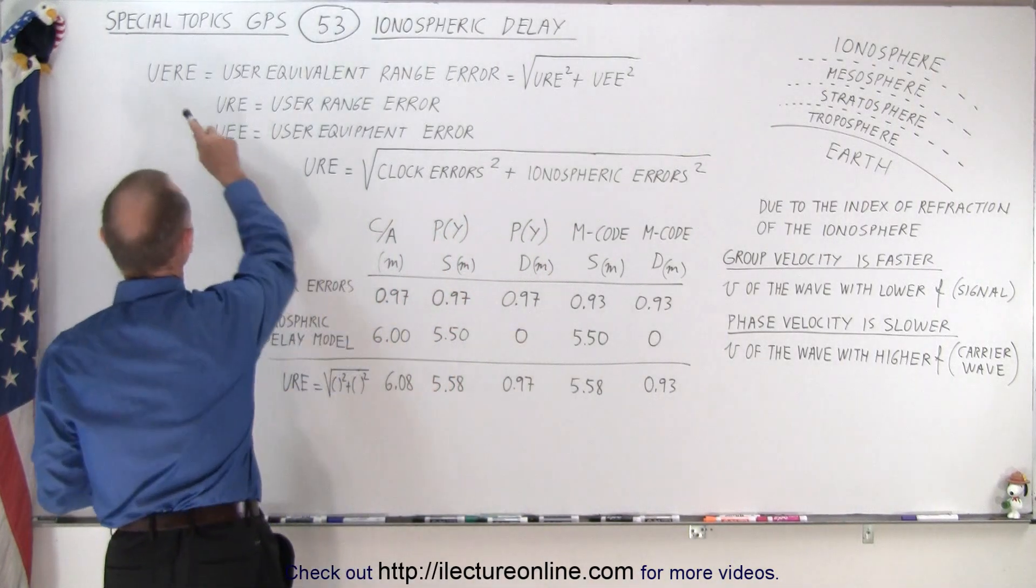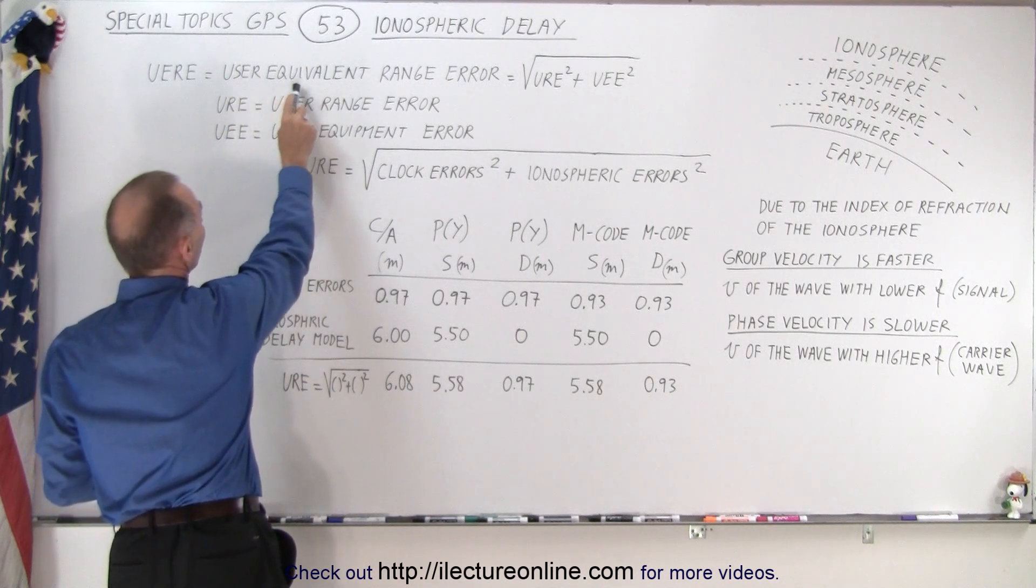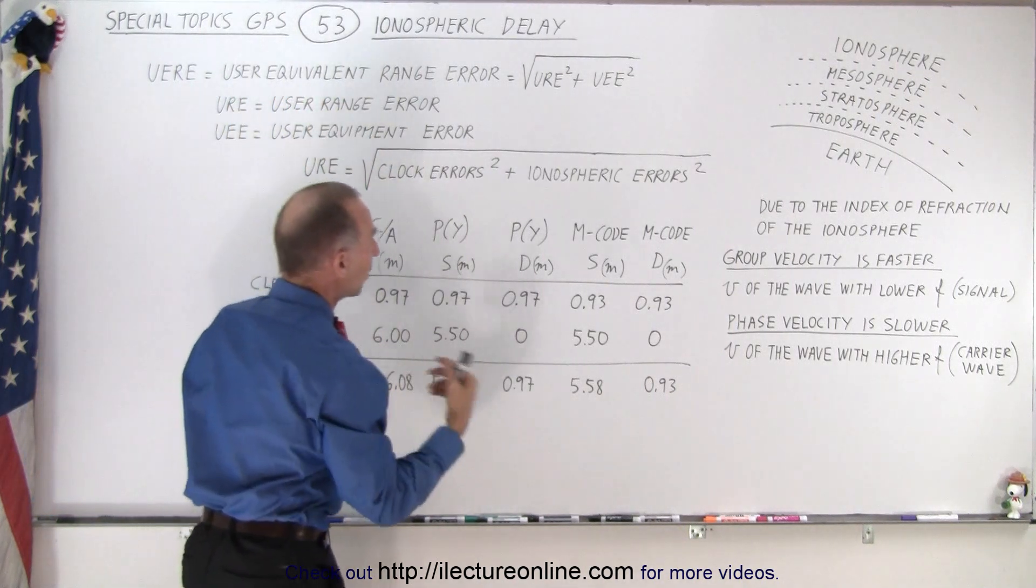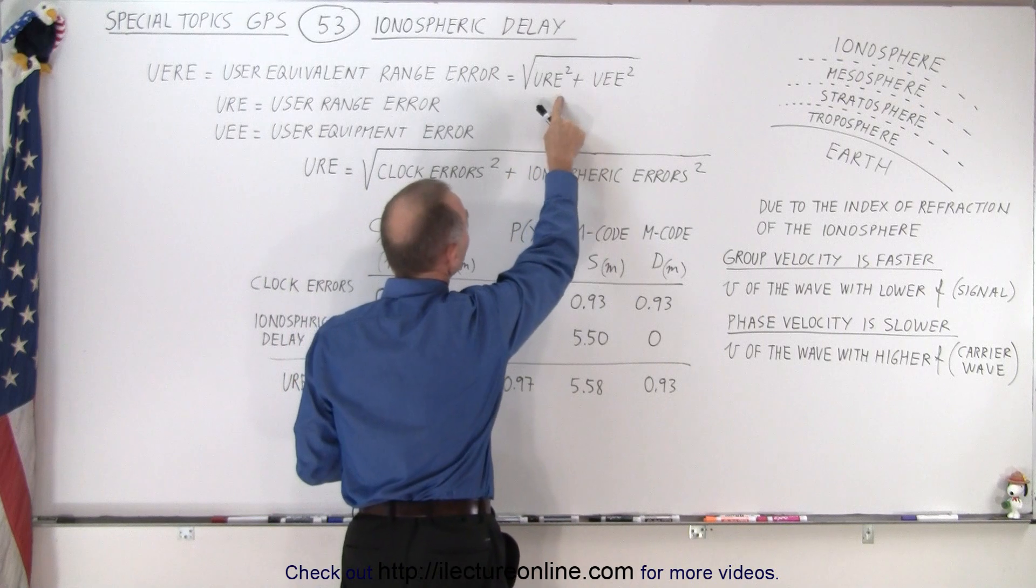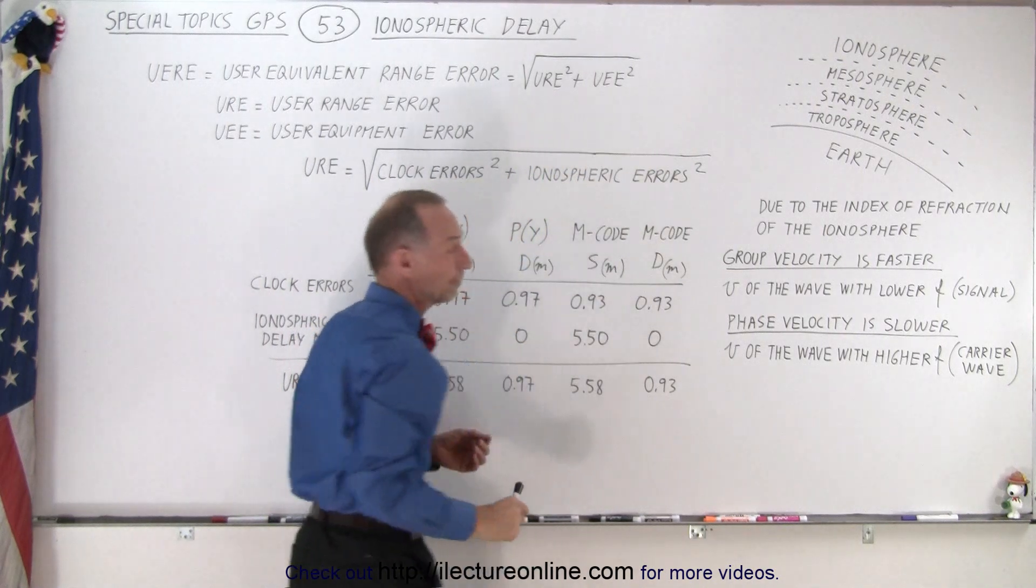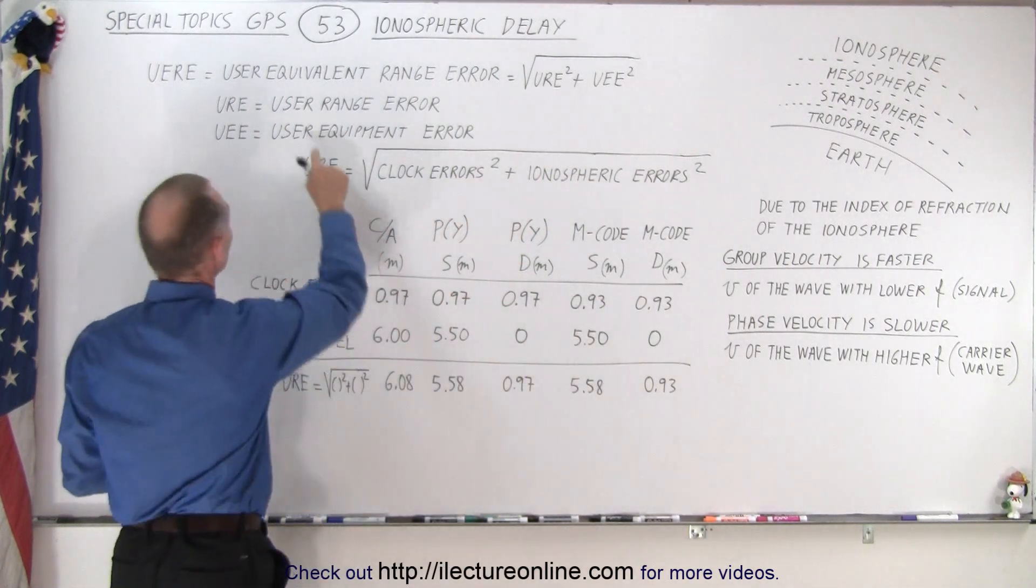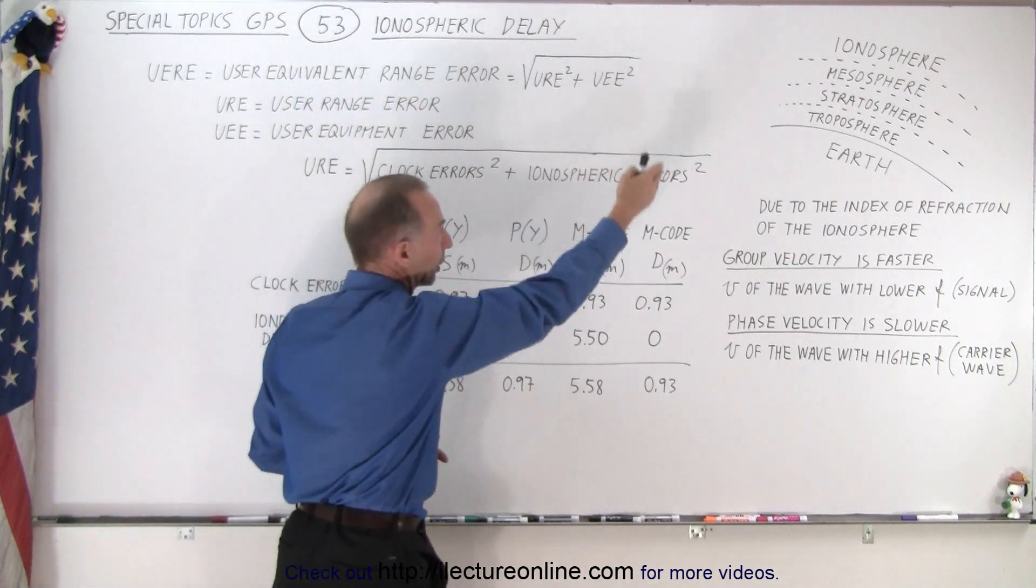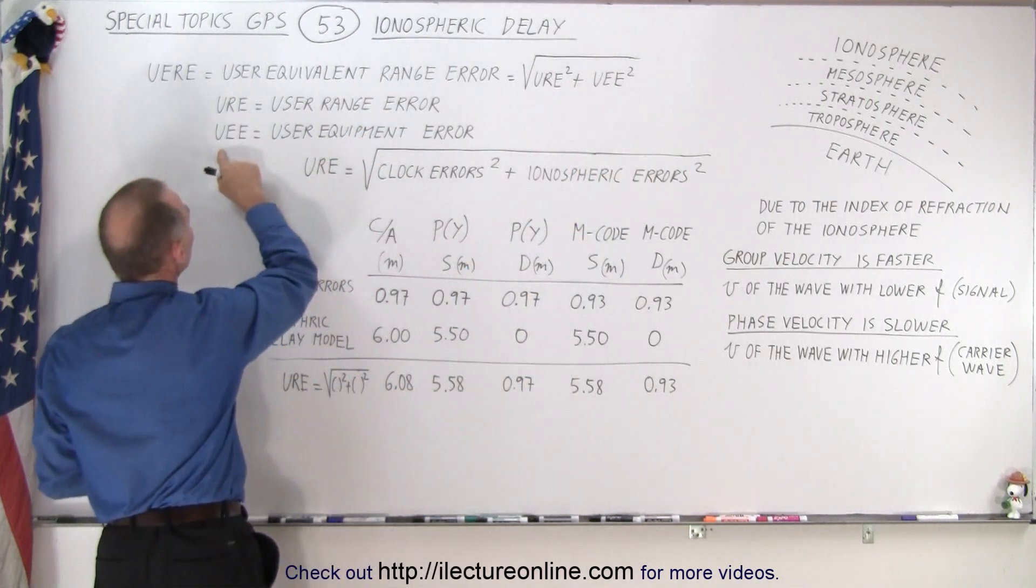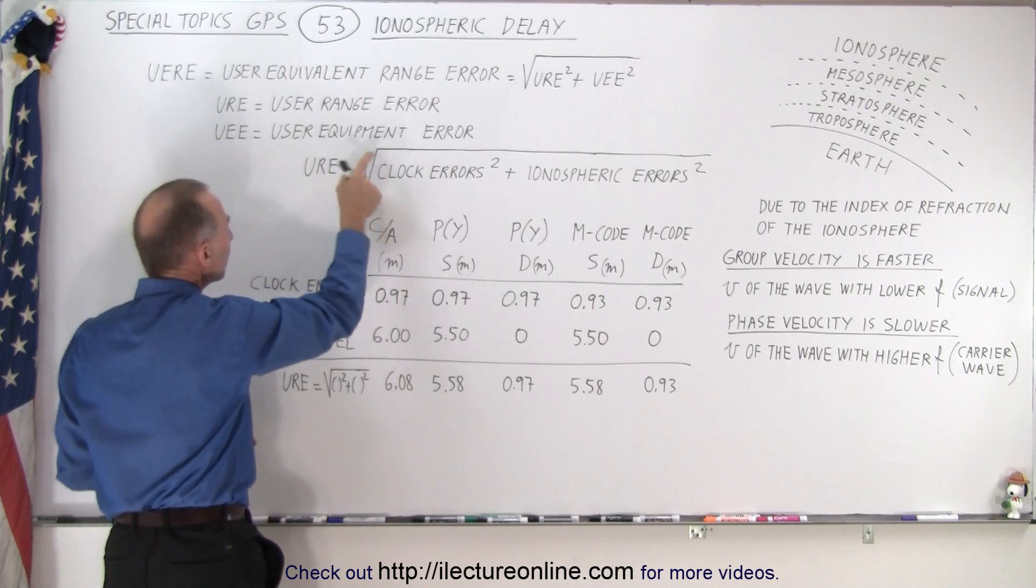We have what we call the UERE, which is called the User Equivalent Range Error, which is primarily the square root of the UERE squared plus the UEE squared. And the UERE stands for User Range Error, which is associated with traveling through the ionosphere.